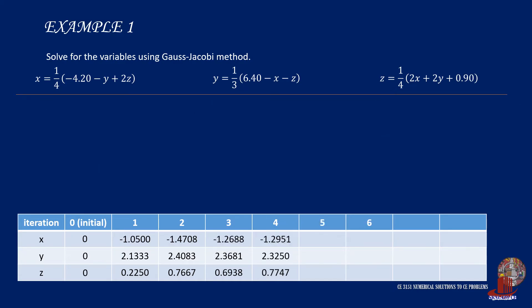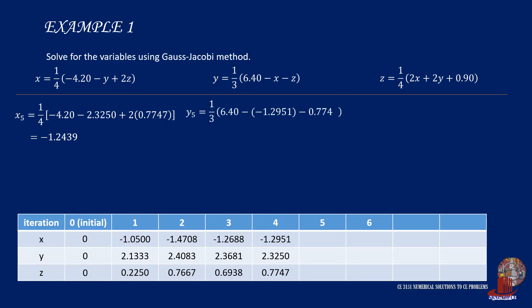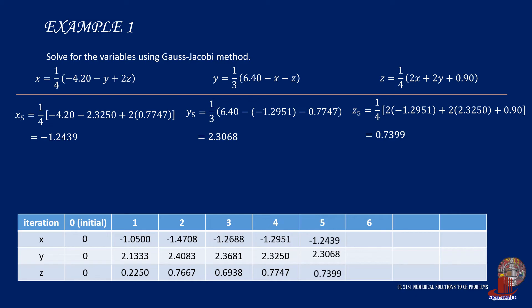Going to the fifth iteration, x₅ is one fourth of negative 4.2 minus 2.3250 plus 2 times 0.7747, giving negative 1.2439. y₅ is one third of 6.4 minus negative 1.2951 minus 0.7747, simplified as 2.3068. Then z₅ is a quarter of 2 times negative 1.2951 plus 2 times 2.3250 plus 0.90, giving 0.7399. The fifth iteration is complete.